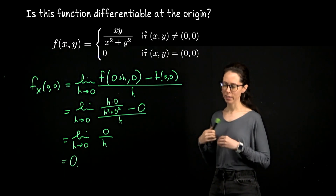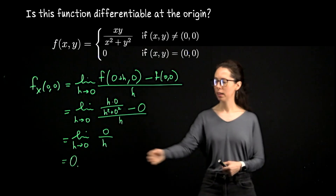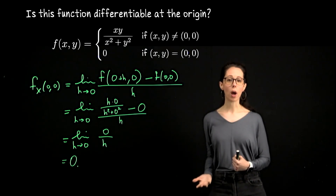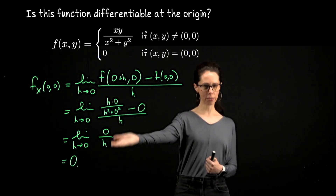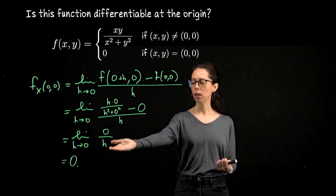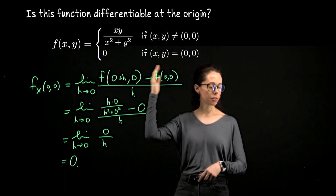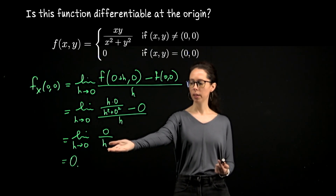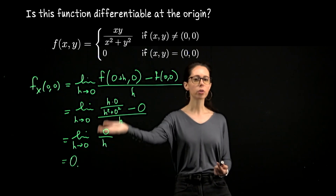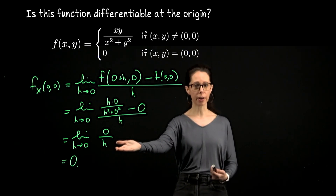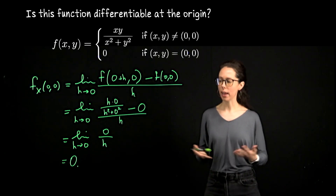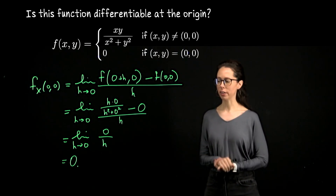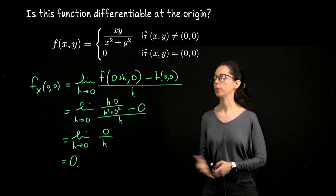For a bit more convincing: if h is 0.1, zero divided by 0.1 is zero. If h is 0.0001, zero divided by that is still zero. So as h goes to zero, this quotient always exists and equals zero, so its limit is zero. Therefore, we've computed the partial derivative of f with respect to x at the origin, and it equals zero.